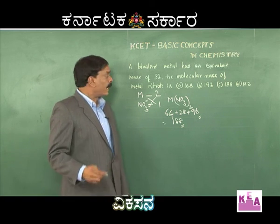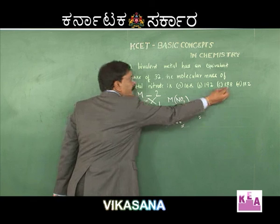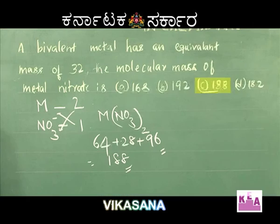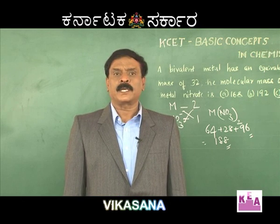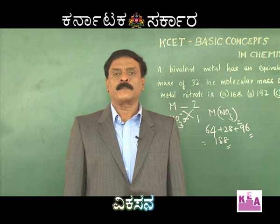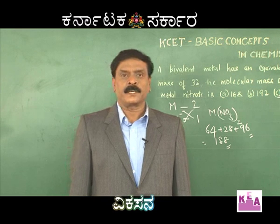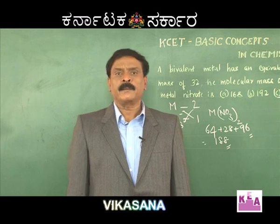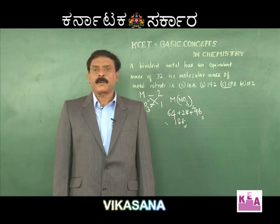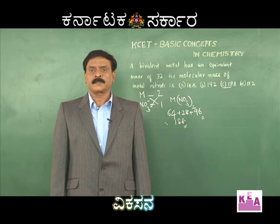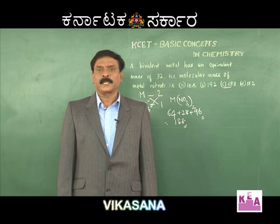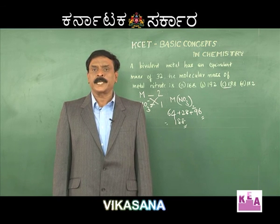That is 188, and hence the correct answer is option C, that is 188. So far we have gone through a number of questions, most of them numericals on basic concepts in chemistry. I hope you will be benefited by the questions that have been solved. Please prepare properly, keep cool, face the exams confidently and score as many marks as possible. I am Vinaykumar, Principal, KLE College, wishing you all the best for your CET exams. Namaskara.